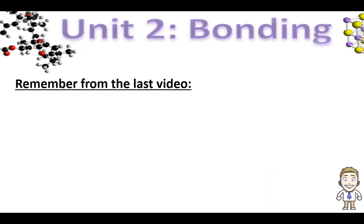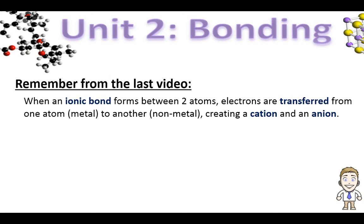Welcome to video number three of our unit two on bonding video series, where we take a look at a different way that atoms will chemically bond to one another known as covalent bonding. Before we do this, I want to recap some things from the last video where we talked about ionic bonding.